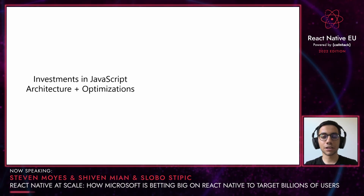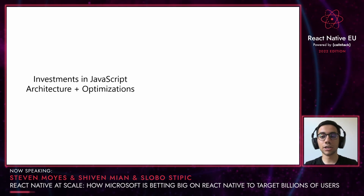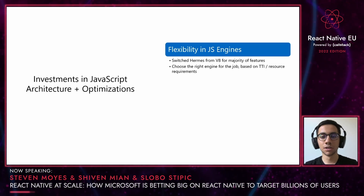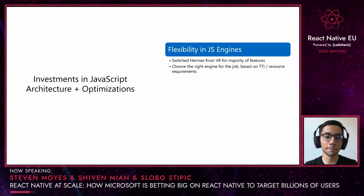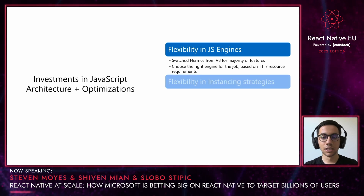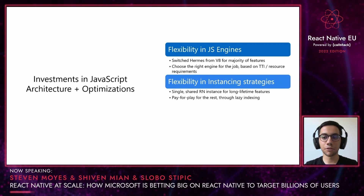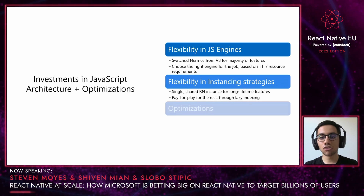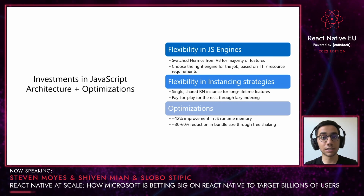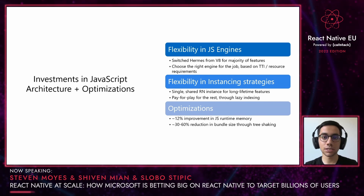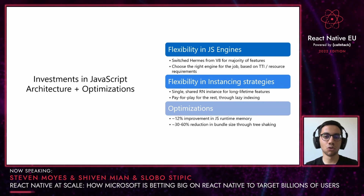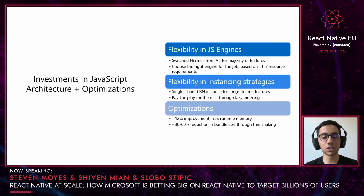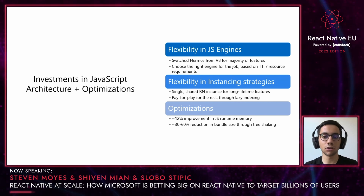In order to make the Office suite of applications super-performing on each device, we realized we also need to make improvements to the underlying JavaScript hosting architecture. For example, we have the ability to choose the right JavaScript engine for the job based on time to interaction and resource requirements. Currently, we've switched over to Hermes from V8 for several of the features on mobile. We've also made changes to the way we host our experiences — we switched over to a single shared instance for long-lifetime features that start on boot, and we kept a pay-per-play strategy for the others where the instance is created on demand. These changes brought significant performance gains in runtime memory and bundle size. We're continuing to be flexible in the architectural choices that we make, deciding on a feature-by-feature basis and through our engagement with the community and the React Native ecosystem, adapting to further changes to the React Native architecture as it becomes more performant and easier for developers to build with.